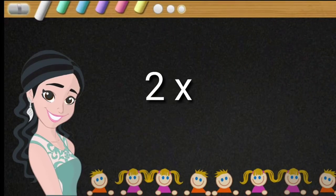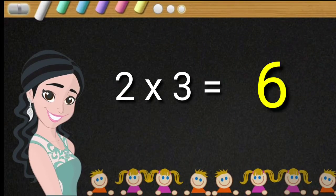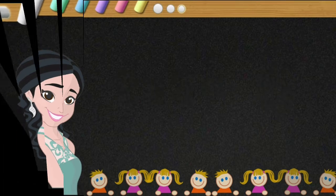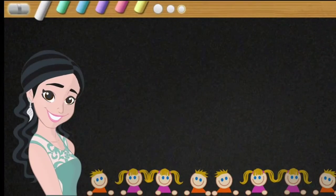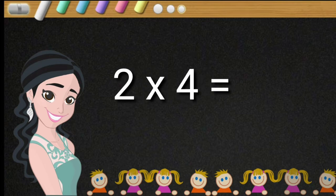Two threes are six. Two threes are six. Two fours are eight. Two fours are eight.